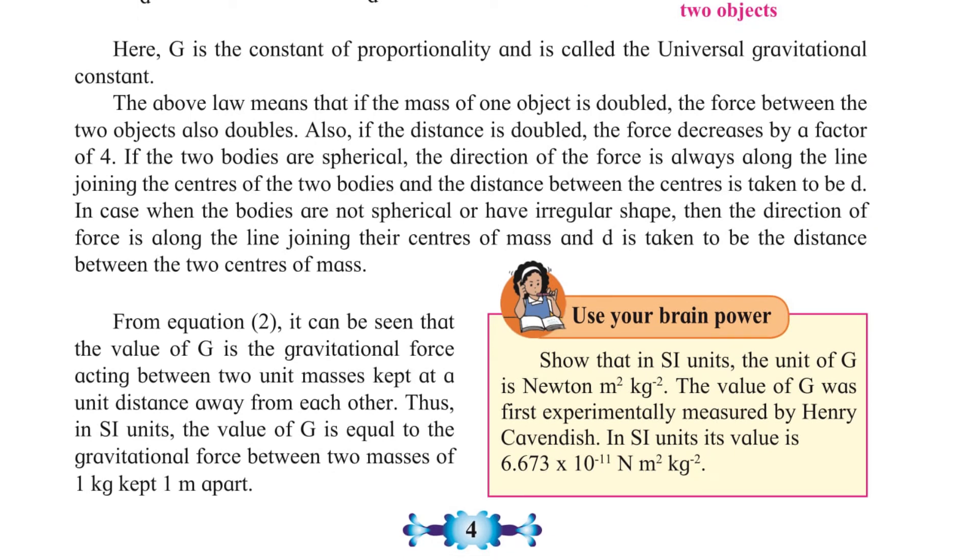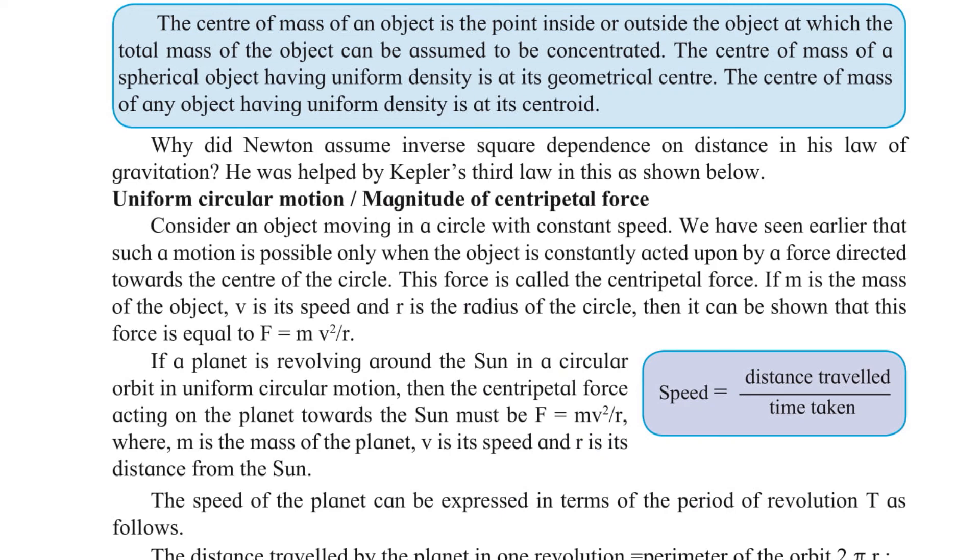From equation 2, it can be seen that the value of G is the gravitational force acting between two unit masses kept at a unit distance away from each other. Thus, in SI units, the value of G is equal to the gravitational force between two masses of 1 kg kept 1 meter apart.